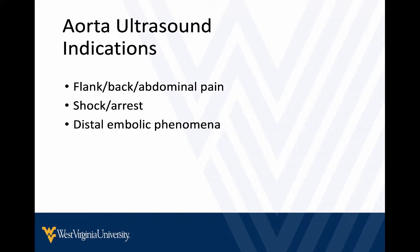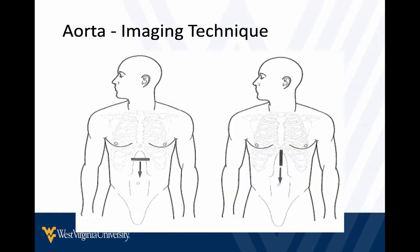Remember, the aorta is a retroperitoneal structure, so often their pain will be in their back or their flank. Sometimes aortic aneurysm rupture can mimic kidney stone. So any patient that's over, say, 50 — if you're thinking about kidney stone, you should also be thinking about their aorta as well.